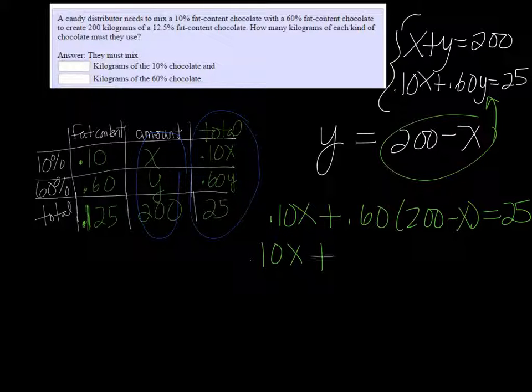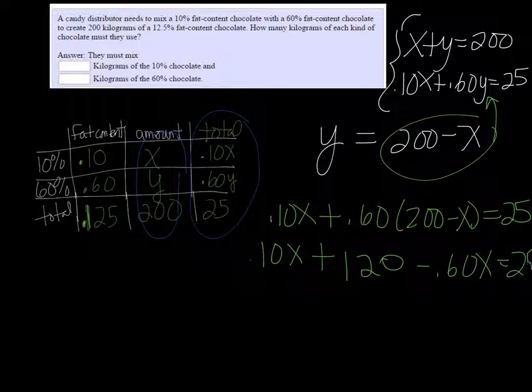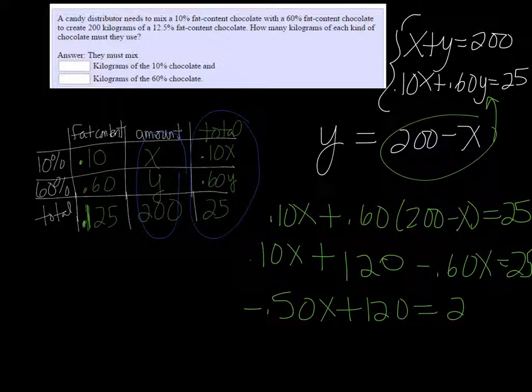Distributing, I get 0.10x plus... 0.60 times 200 would be 120, minus 0.60x equals 25. And then combining like terms on the left, I get negative 0.50x plus 120 equals 25.